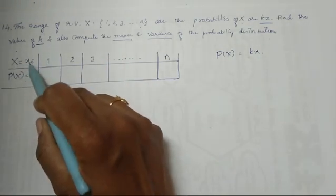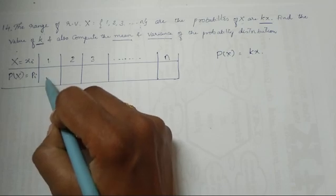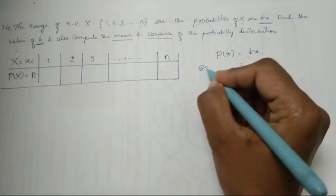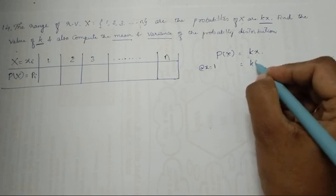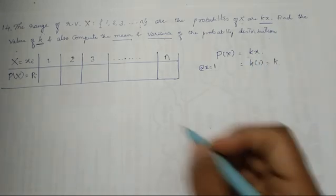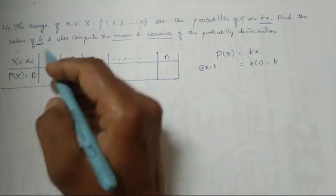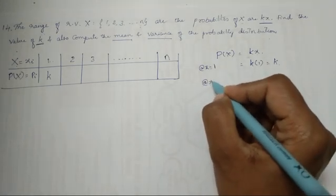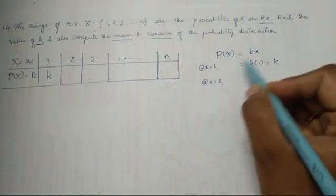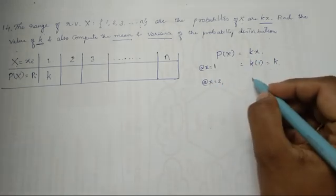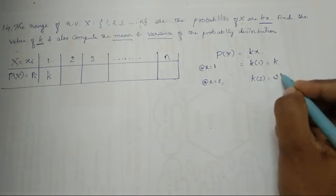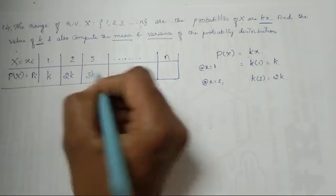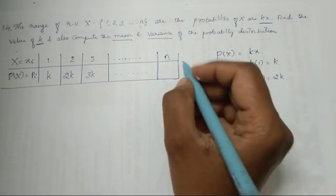If the value of x is equal to 1, what will be the probability value? I substitute x = 1 in kx: k into 1 which is equal to k. Similarly, at x = 2, substitute 2 in kx: k into 2 is 2k. So it will become 2k, 3k, so on up to nk.